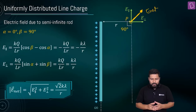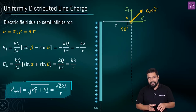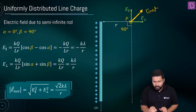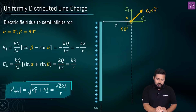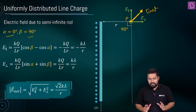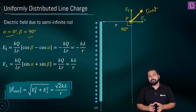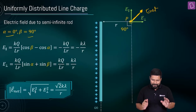This is how you figure out the net electric field for a semi-infinite wire where the point is closer to the finite end. The values of alpha and beta, the direction, and the final result are what's very important: the magnitude of the net electric field equals √2 · kλ/r.